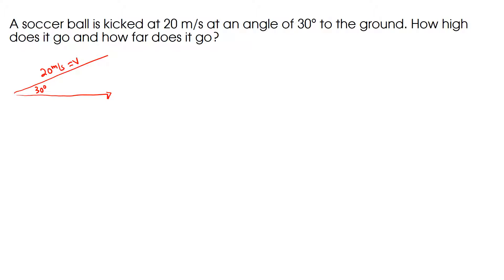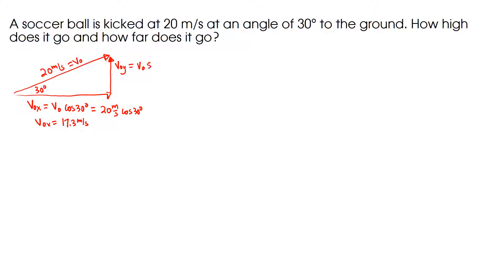This is my v-initial. I know that there is a v-initial-x, which is v-initial times the cosine of 30 degrees, because x is the side that's adjacent to the angle that I know. So v-zero-x is 20 meters per second times cosine of 30 degrees, which gives 17.3 meters per second. I also have an initial y-component: v-initial-y equals v-zero times the sine of 30 degrees, so that's 20 meters per second times sine of 30 degrees, which is 10 meters per second.